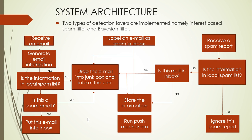Here is the system architecture. First, an email is received. Based on its contents, email information is generated, examined, and compared against the local spam lists. If during this initial stage certain keywords have more occurrences than a specific threshold value, it is moved to the Bayesian detection layer. Otherwise, if certain spam words are used but the value is below the threshold, the email is sent to the junk folder for the user to determine its validity. Once in the Bayesian filter, it is checked whether it is spam based on the training. If it is spam it is moved to the junk folder; otherwise it is placed in the user's inbox.